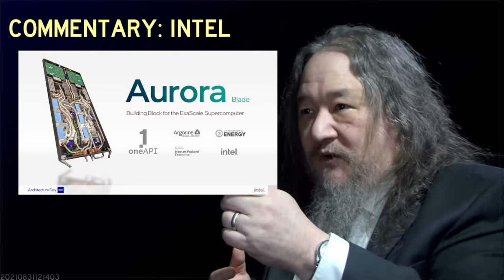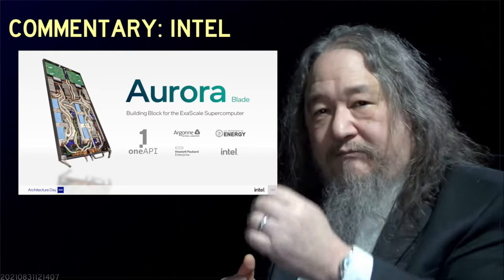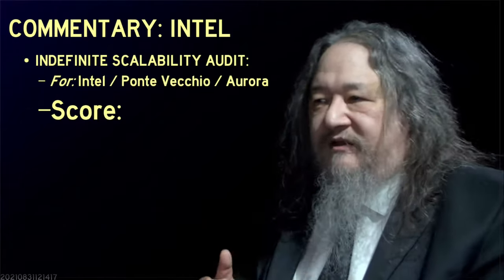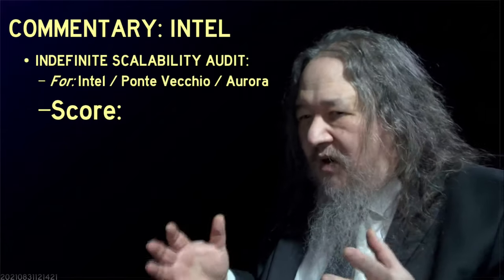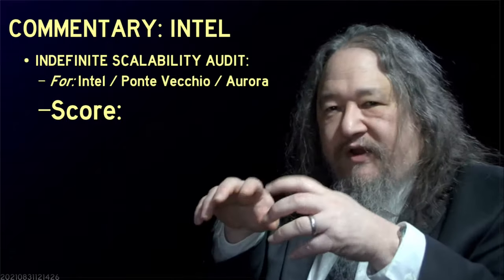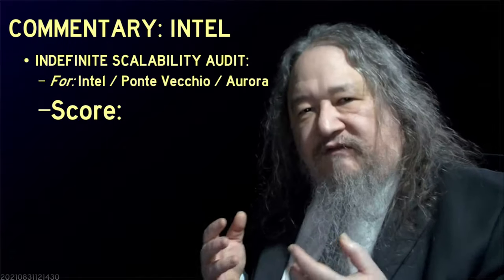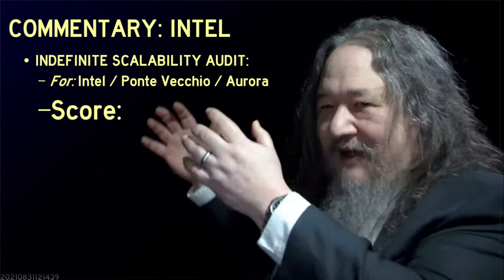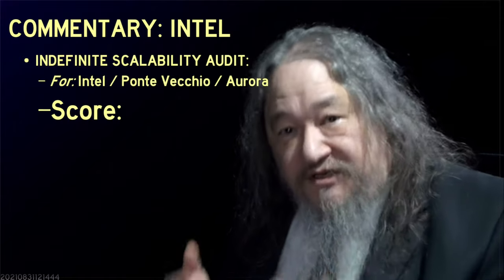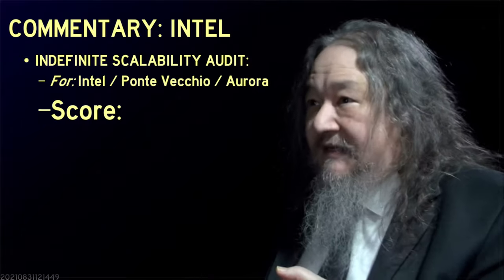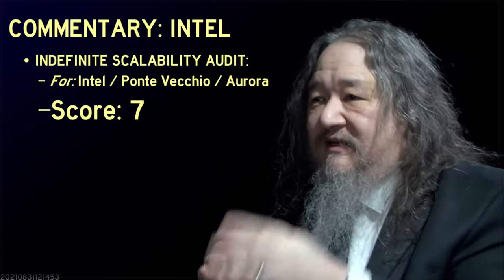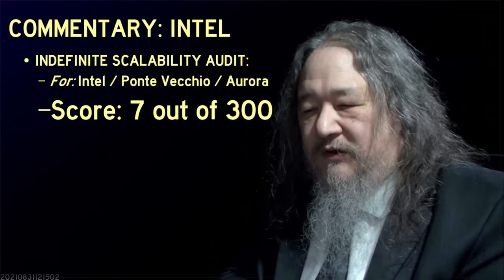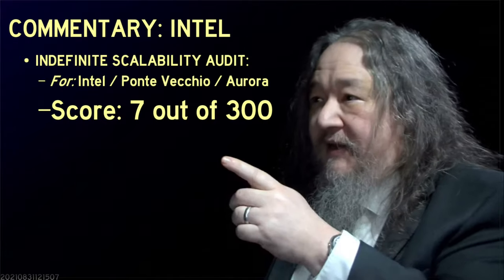They have to hurry because other folks are on the brink of bringing up their own exascale machines designed in completely different ways. That's where we end the Intel story. So what does our indefinite scalability audit say? Because of Intel's philosophy of adding something extra at each level, the tile for Aurora is the entire supercomputer. You'd have to plop down a whole other supercomputer, and they wouldn't even be able to talk to each other without additional engineering. Intel's score: I'm giving it a 7 — and that is not a C. That is 7 out of 300.